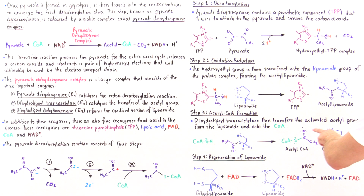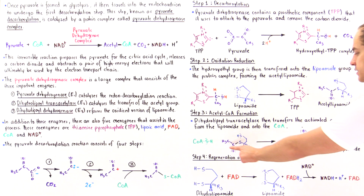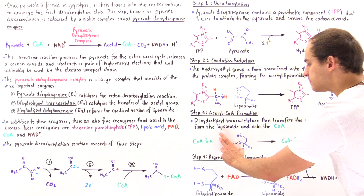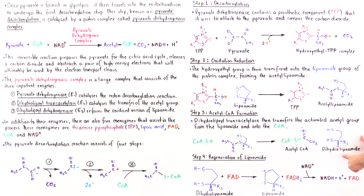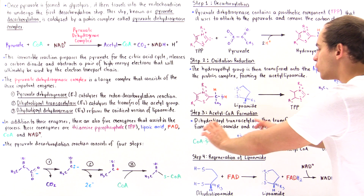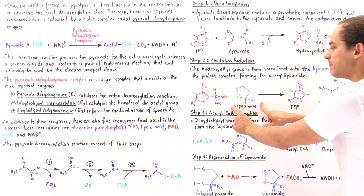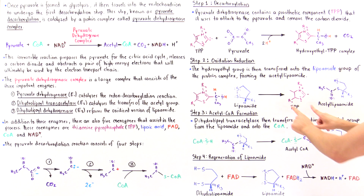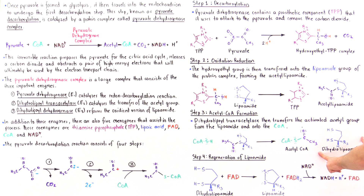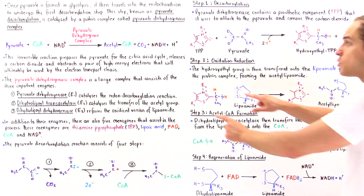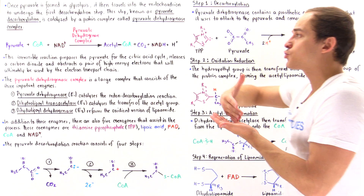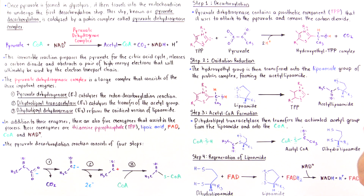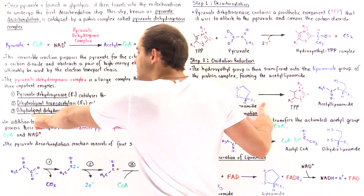In step three, catalyzed by dihydrolipol transacetylase (E2), the activated acetyl group is transferred from acetyl lipoamide onto coenzyme A, forming the acetyl coenzyme A complex. However, unlike TPP which was regenerated in step two, the lipoamide is not regenerated here — it becomes dihydrolipoamide. This is where the final enzyme comes into play.